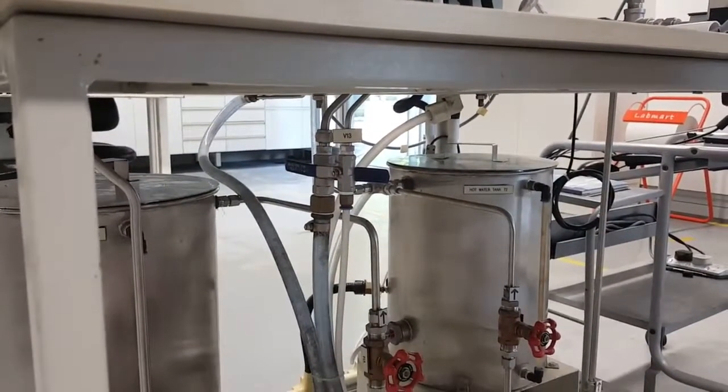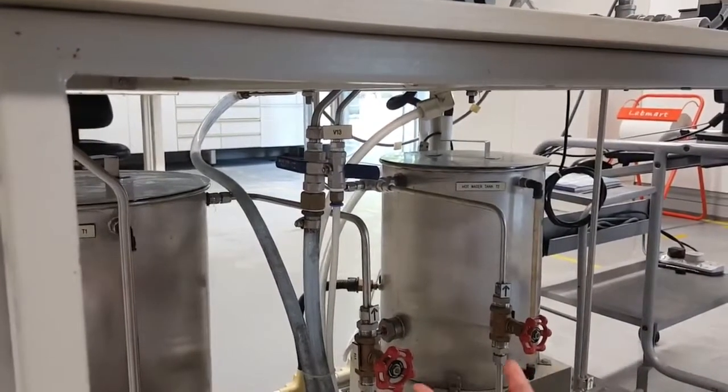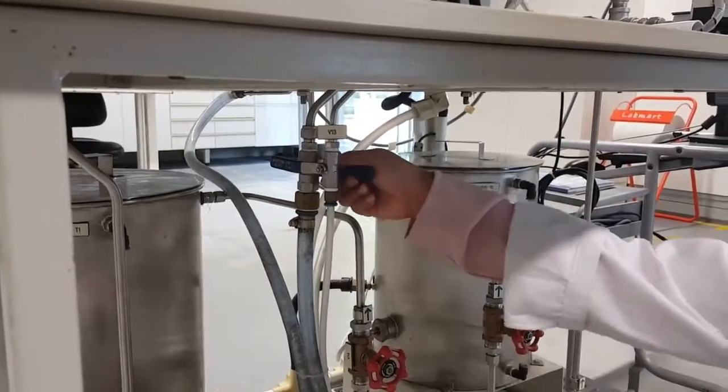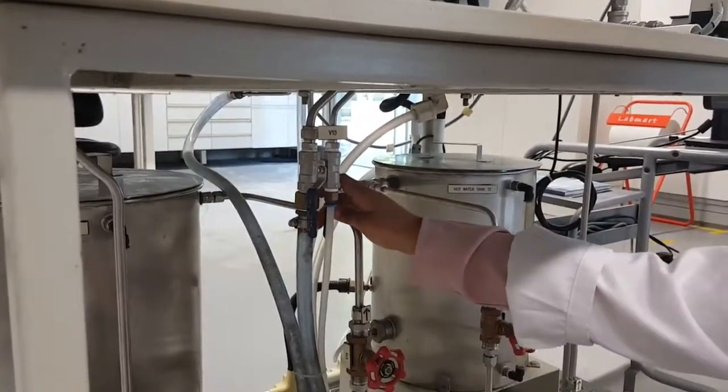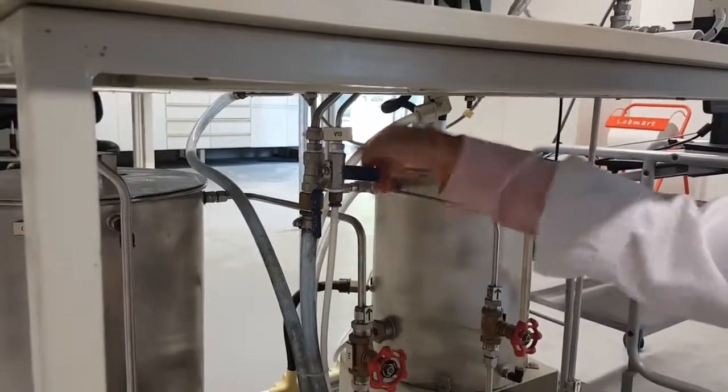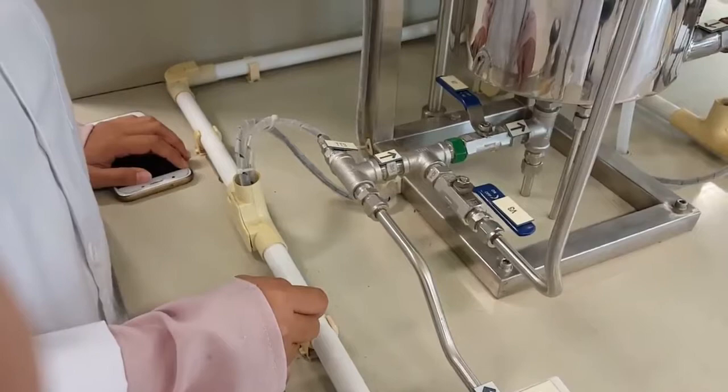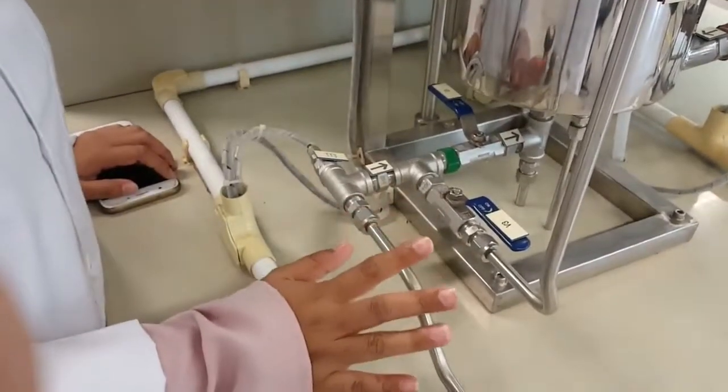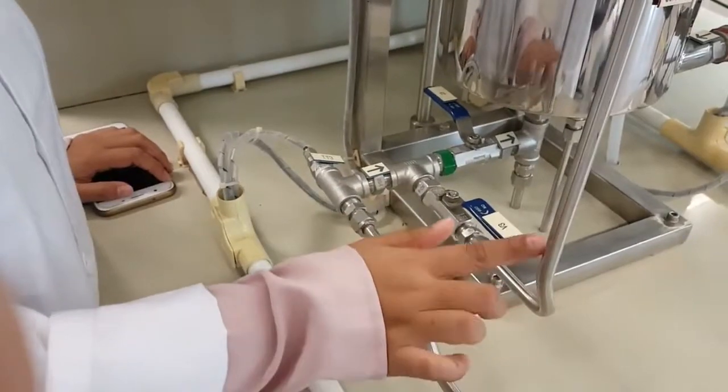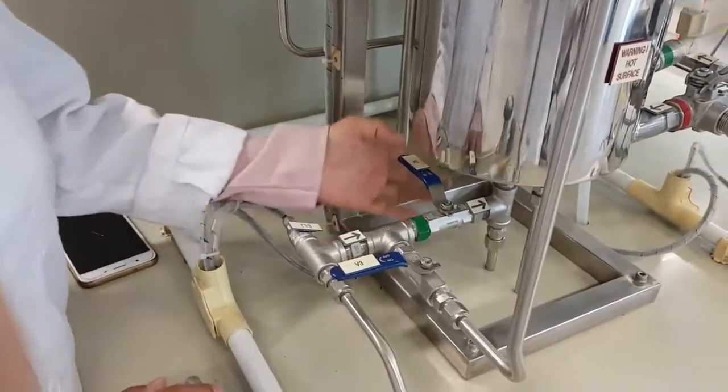For the first part of the experiment, we are going to heat cold water inside the vessel. So firstly, we have to drain whatever fluid inside the vessel and the jacket. Now, we close both of the vessels and the jacket. Before we fill in the vessel with cold water, make sure that the flow to the cooling coil is closed and the flow to the vessel is open.